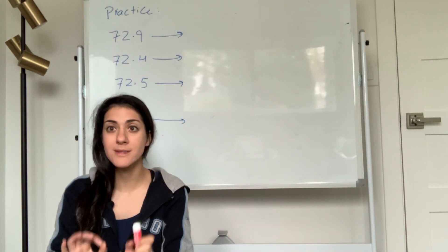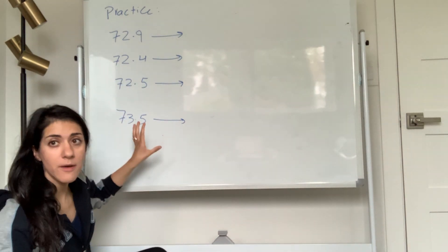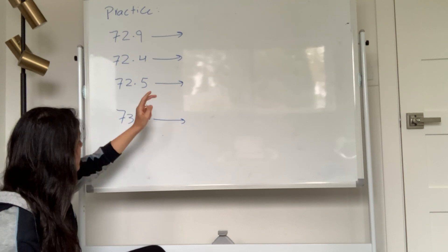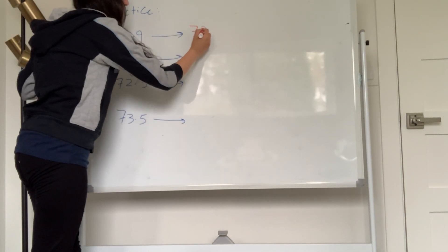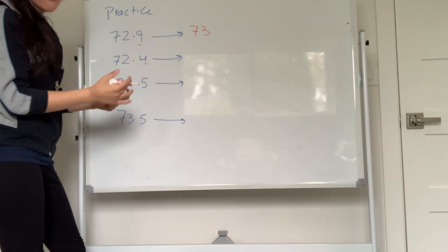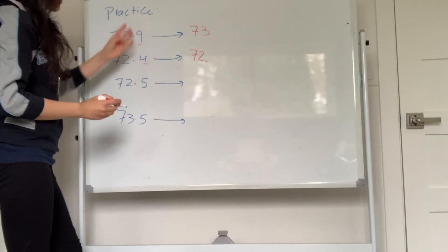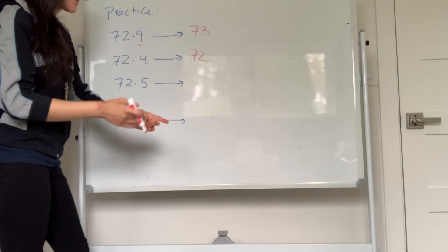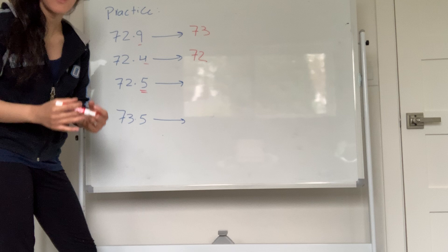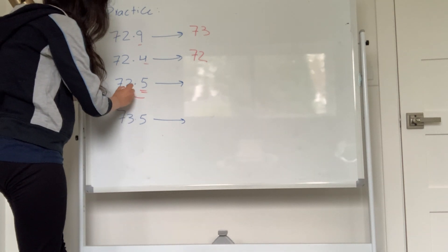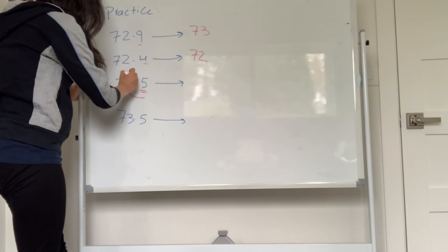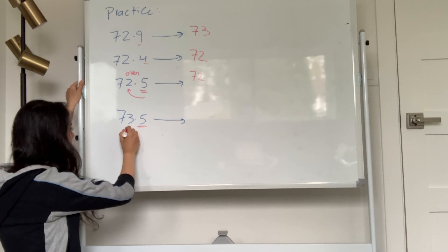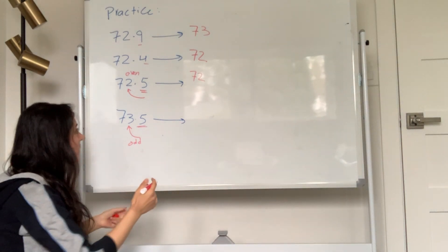I want to do a couple of practice problems to make sure we're on the same page. I want to round all of these numbers to two sig figs. If I have 72.9, since this is nine, this becomes 73. I have 72.4 — since this is four, I round it down to 72. Now, 72.5. If you have one through four, you round down. Six through nine, you round up. But when you have five, it's a little more complicated — you have to look at the number before. For 72.5, the number before is even, so you round down to 72. For 73.5, the number before is odd, so you round up to 74.